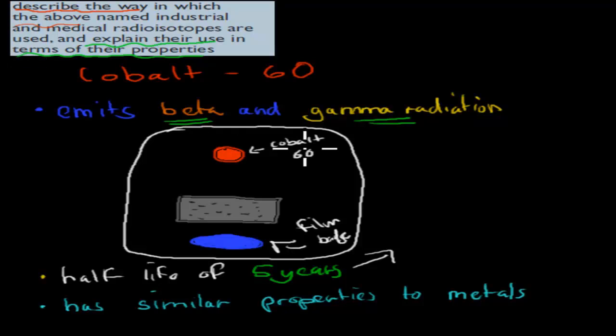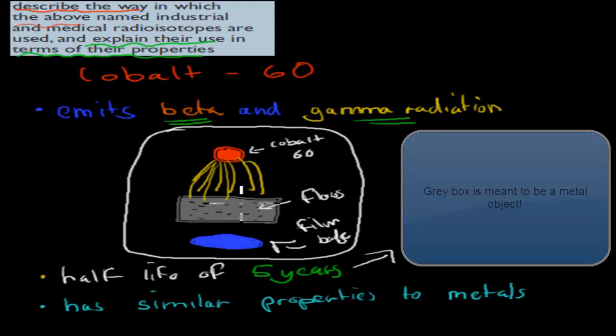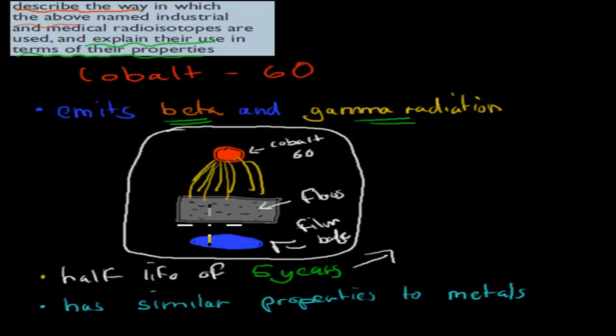Cobalt-60 emits really strong gamma radiation when it decays. Obviously it's all sealed up in a safe place. But if there are flaws—these black areas represent the flaws—if there are flaws in the metal, the gamma radiation can penetrate. For perfect metal, it would not be able to penetrate. Because there are flaws, it can go all the way through the metal.